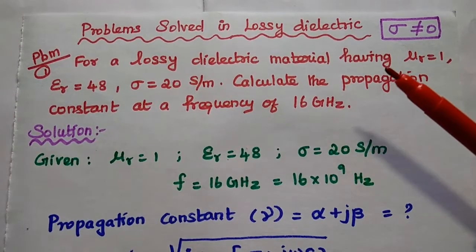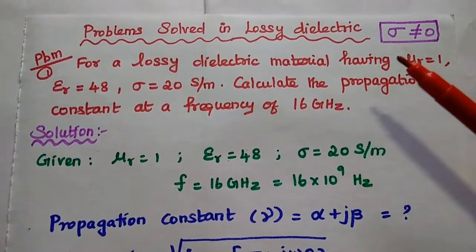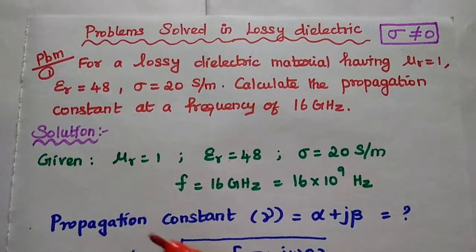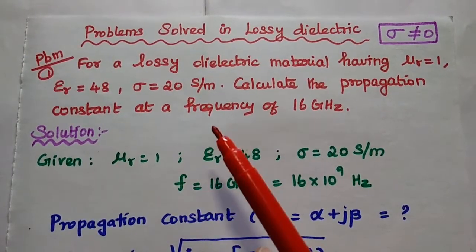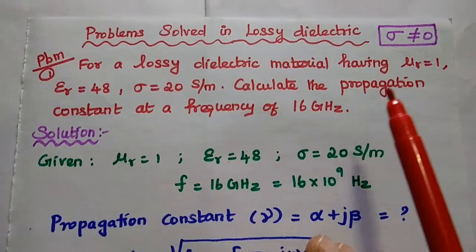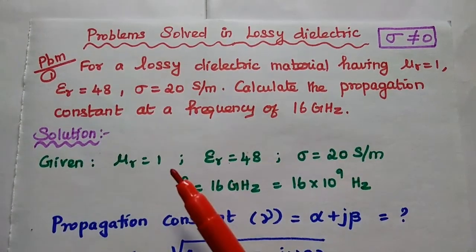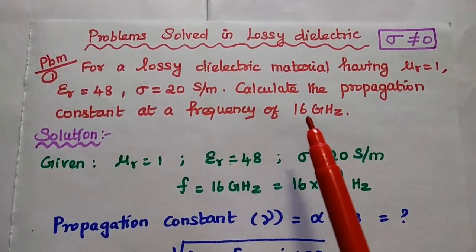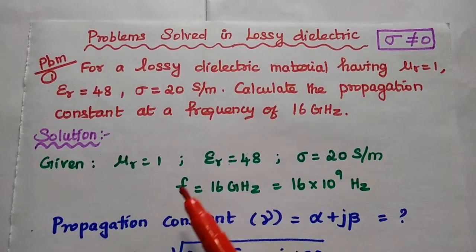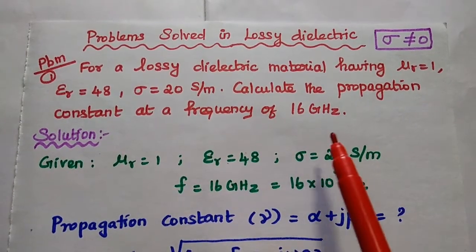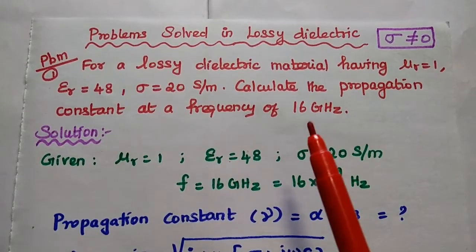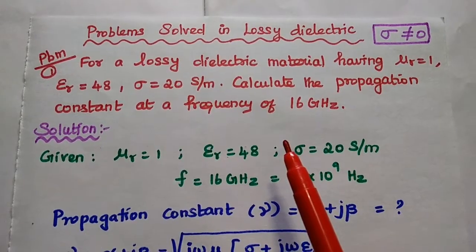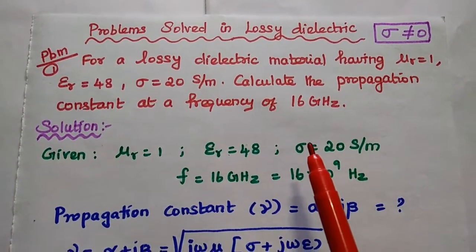Let's solve important problems in lossy dielectric. For a lossy dielectric material, the conductivity sigma is not equal to zero. First problem: for a lossy dielectric material having mu r equal to 1, epsilon r equal to 48, sigma equal to 20 siemens per meter, calculate the propagation constant at a frequency of 16 gigahertz.